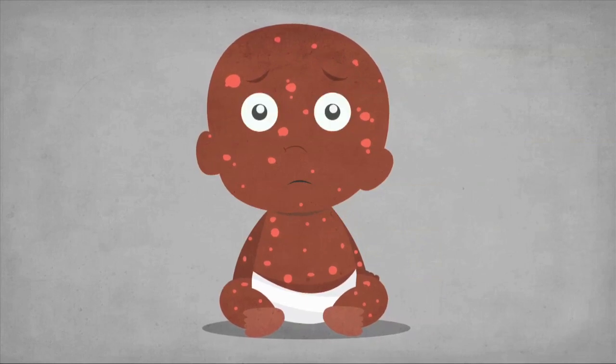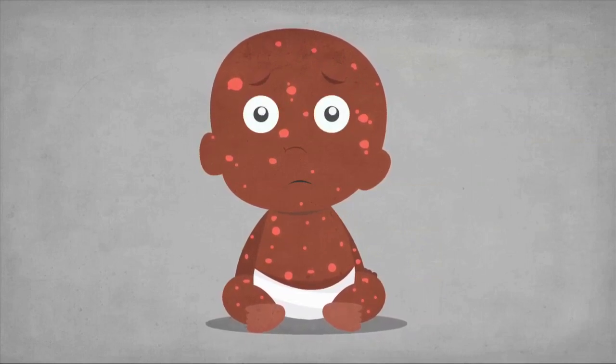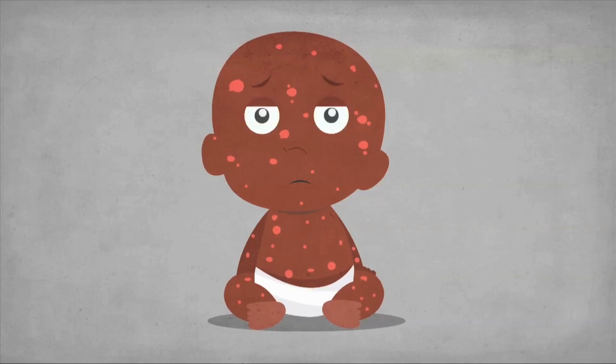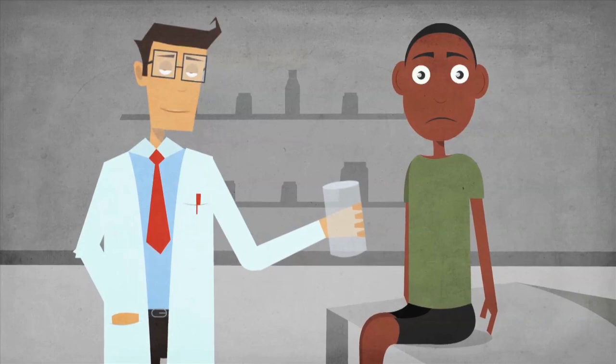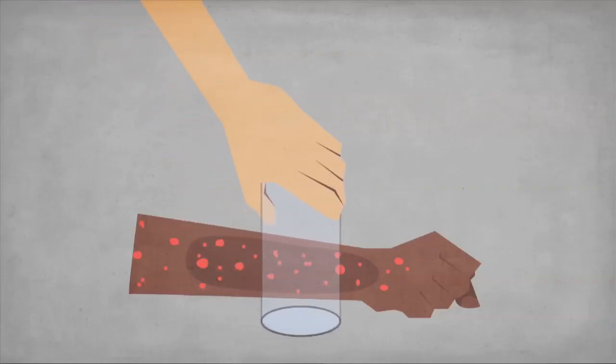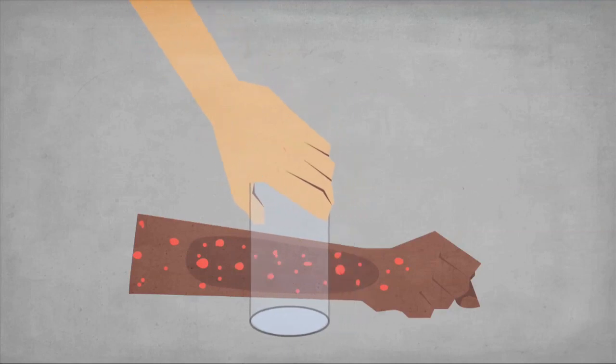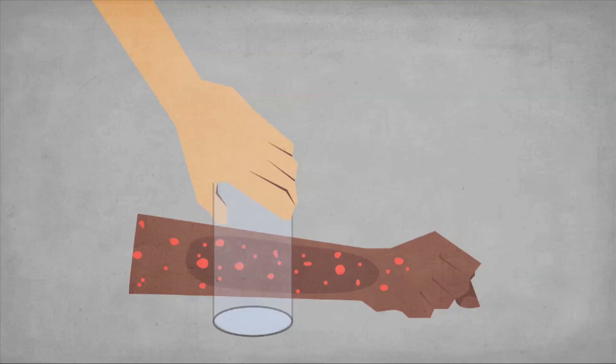At the late stage of meningitis, a rash may be visible on the child's skin. If you have a glass available, it is possible to do the tumbler test. If the glass is pressed firmly against the rash, it will not fade and will remain visible through the glass. If this happens, you must seek medical advice immediately.